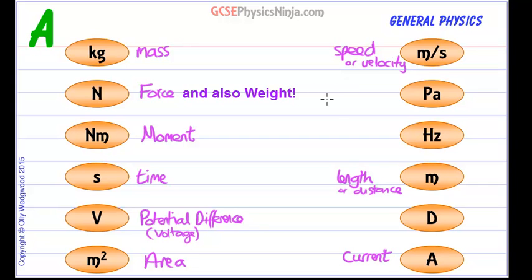Pa stands for pascals and that's a measurement of pressure, how much force is exerted over a certain area. Hz is hertz and that is the quantity called frequency or cycles per second of a wave for example.